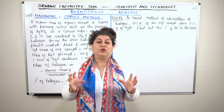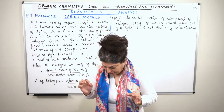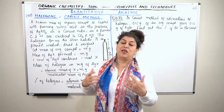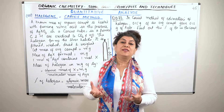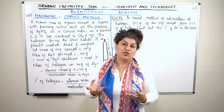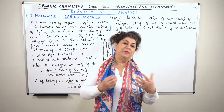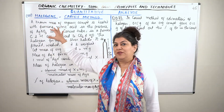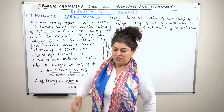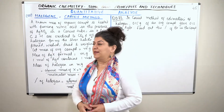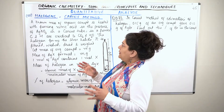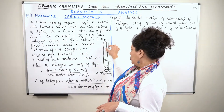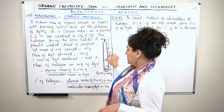Once we find out which halogen is present, the next step is to find out the mass of this halogen and then calculate the mass percentage — this is the quantitative analysis, hence the Carius method. The method is named after the Carius tube used in it. Let me now explain the Carius method to you.